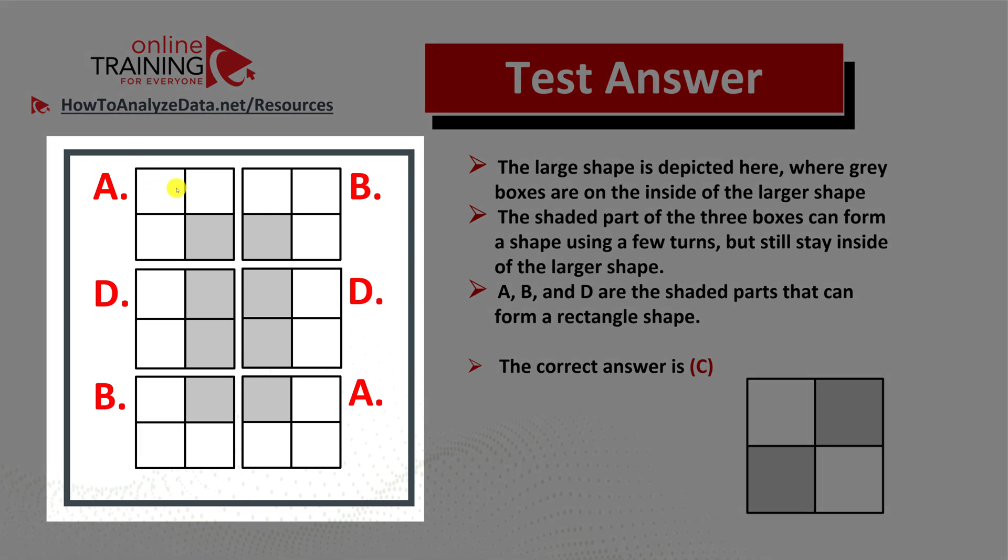In this case, this is the shape, a 4x6 shape with the gray boxes on the inside and the white boxes on the outside, and it was broken down into 2x2 shapes.